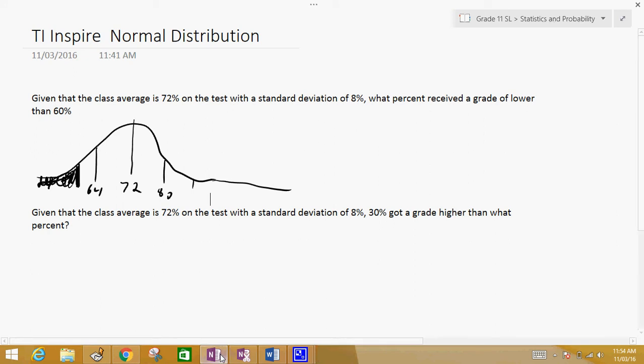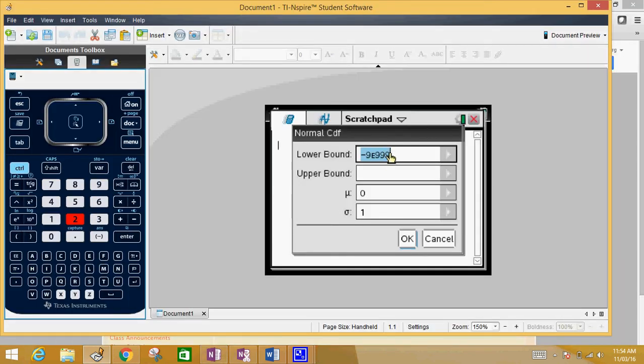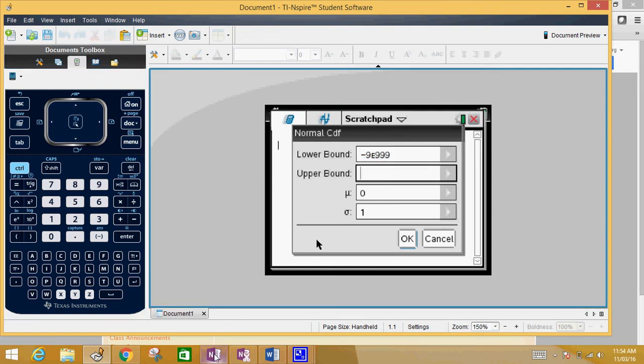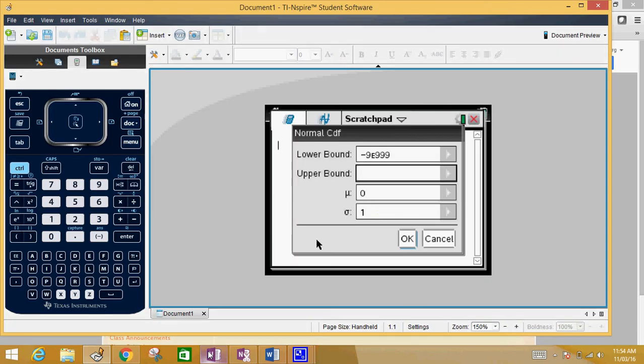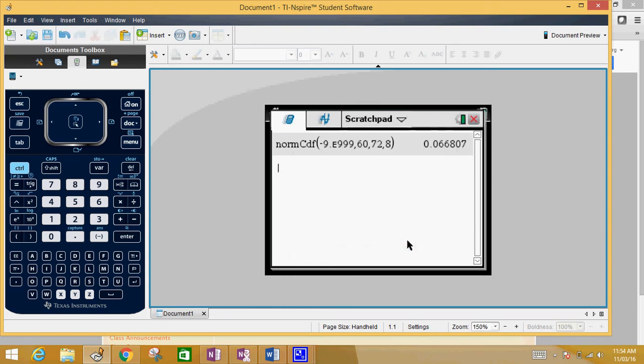The upper bound, well for this question we want to know what percent receives a grade lower than 60, so we want 60 and lower. So the highest mark is 60, so we're going to put 60 here. And the mean was 72 and the standard deviation was 8. Press OK and you get the answer of 6.68%.